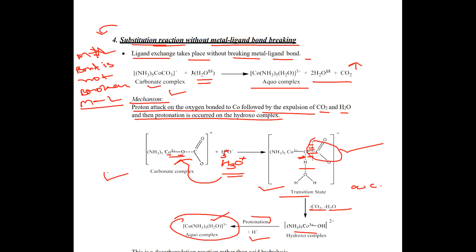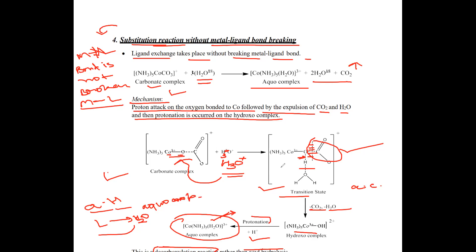This is a decarboxylation reaction rather than acid hydrolysis. Although at the end an aquo complex is formed — just like in acid hydrolysis where a ligand is replaced by H2O to form an aquo complex — in this case the carbonate undergoes decarboxylation. That is why we call it decarboxylation rather than acid hydrolysis, and that distinction you have to keep in mind.